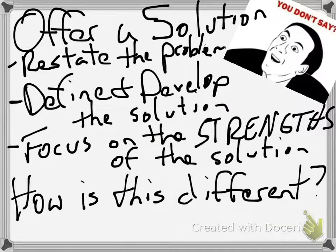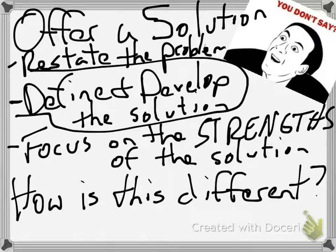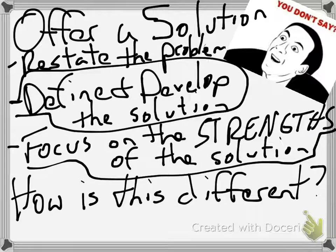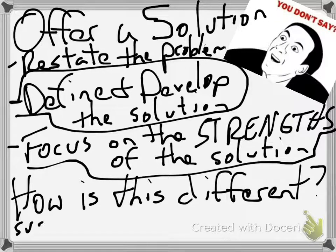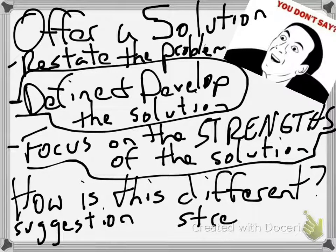Whereas with offering a solution, you're restating the problem, then you define and develop the solution — that means you explain multiple ways of fixing this. More importantly, you have to give the strengths of those solutions: why those solutions are powerful and why they should be used. How is this different from call to action? Very simply, offer a solution is more of a suggestion — instead of telling them what to do, you're suggesting it. And it stresses the solution more than the problem.